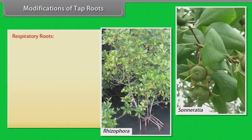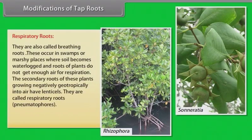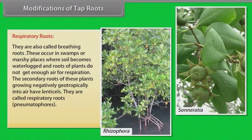Respiratory roots: They are also called breathing roots. These occur in swamps or marshy places where soil becomes waterlogged and roots of plants do not get enough air for respiration. The secondary roots of these plants grow negatively geotropically into air and have lenticels. They are called respiratory roots or pneumatophores.